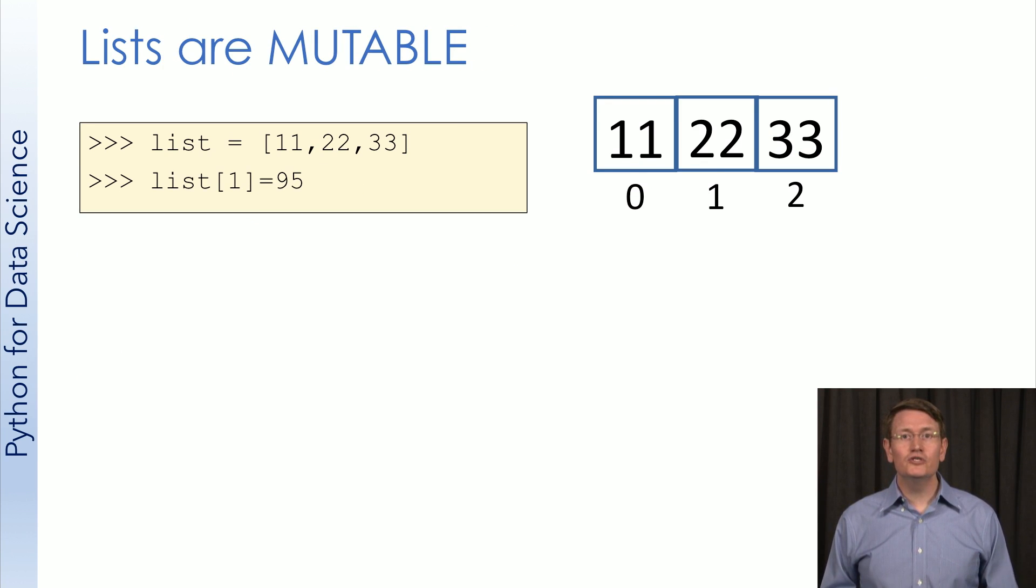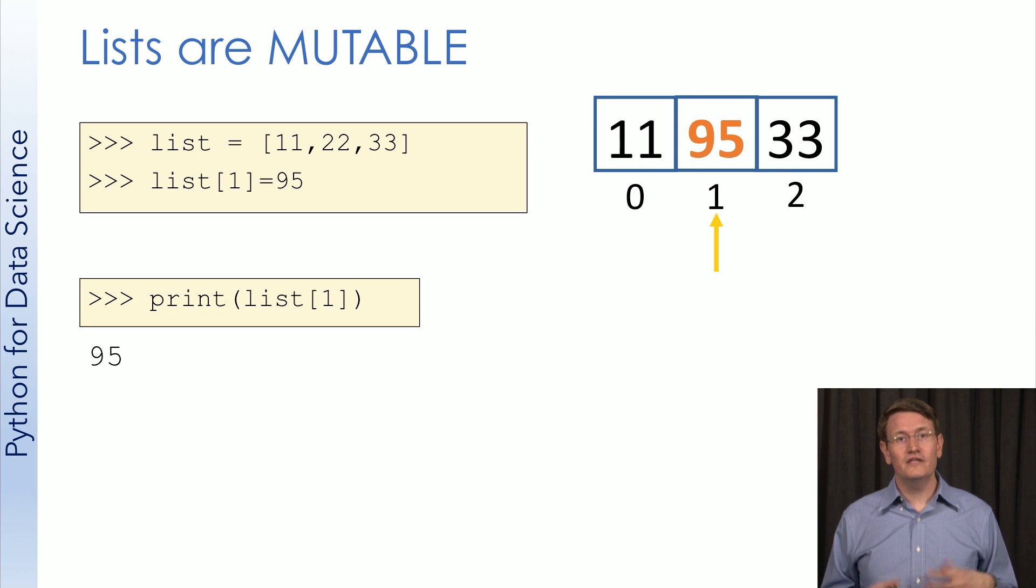Unlike strings, you can change the contents of the elements of a list. Here, we're changing the value at index 1 to be 95. Let's check to see if that did what we'd expect. It did. So one of the nice features of our lists is the ability to manipulate values in that list.